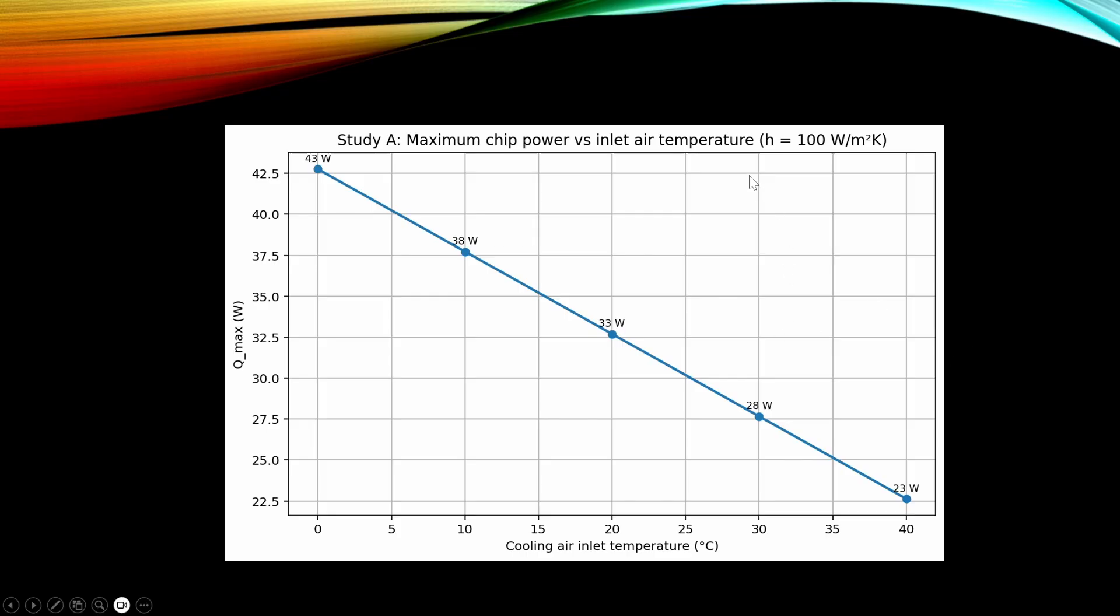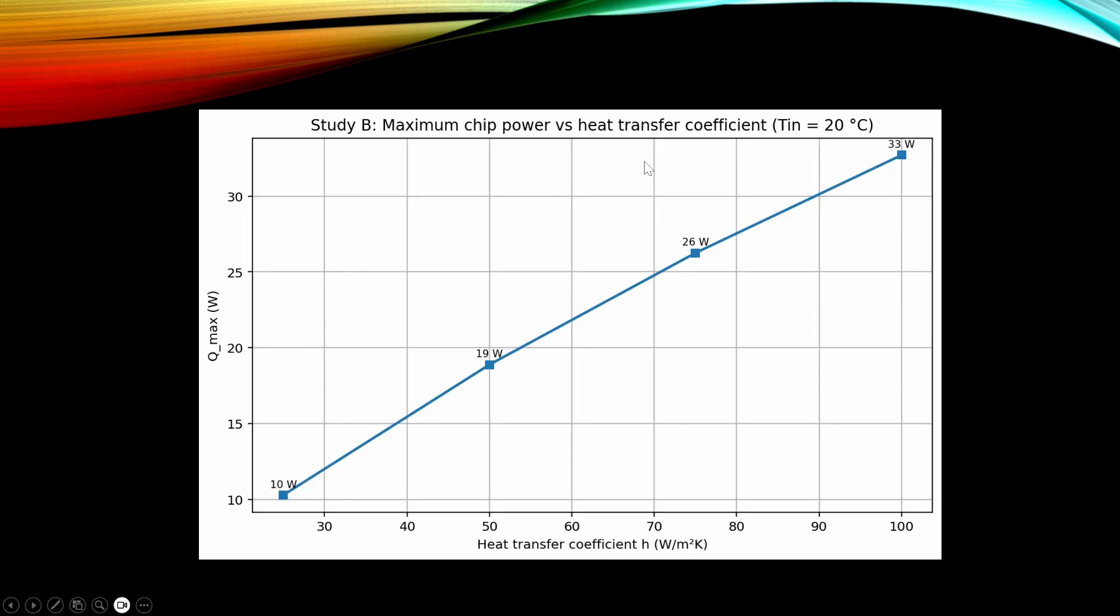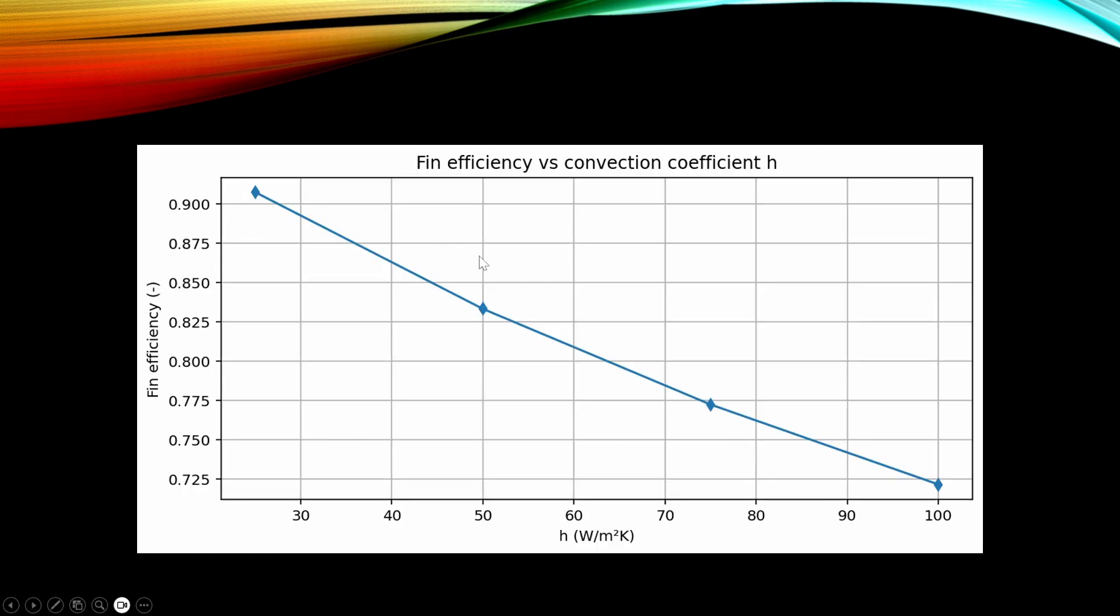And for example here we see a plot of maximum chip power as a function of inlet cooling air temperature, and this was calculated using a convective heat transfer coefficient. And in this next one we see the maximum chip power as a function of this heat transfer coefficient. Here this heat transfer coefficient is from 20 to 100 watts per square meter Kelvin. And on y-axis we have this maximum power. Here is a function of fin efficiency as a function of heat transfer coefficient. And because the material was aluminum, these fin efficiency values are in a typical range for aluminum.